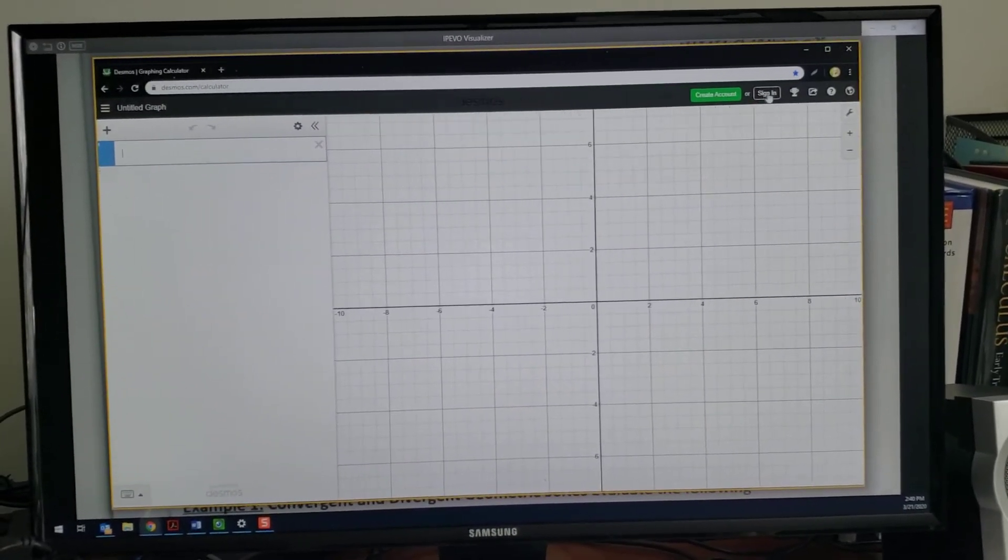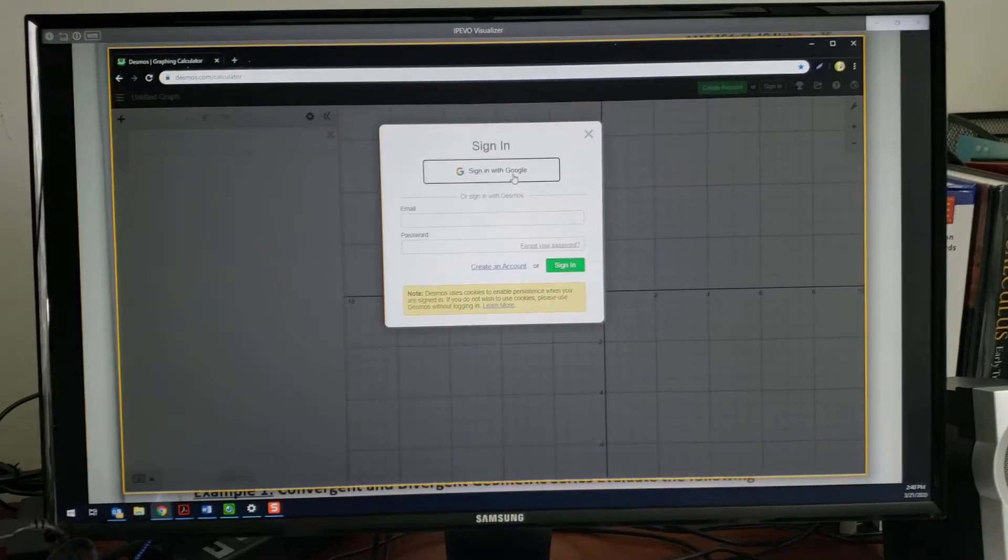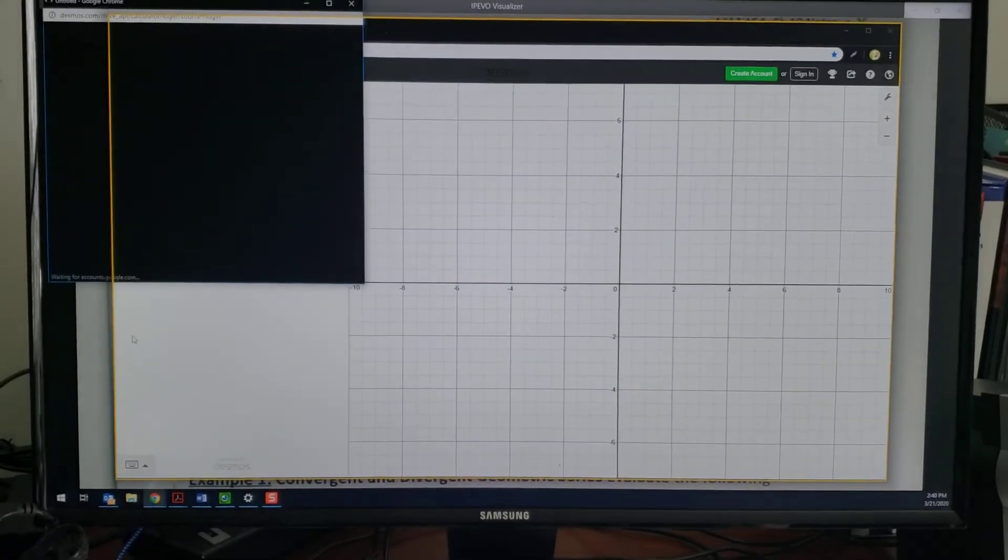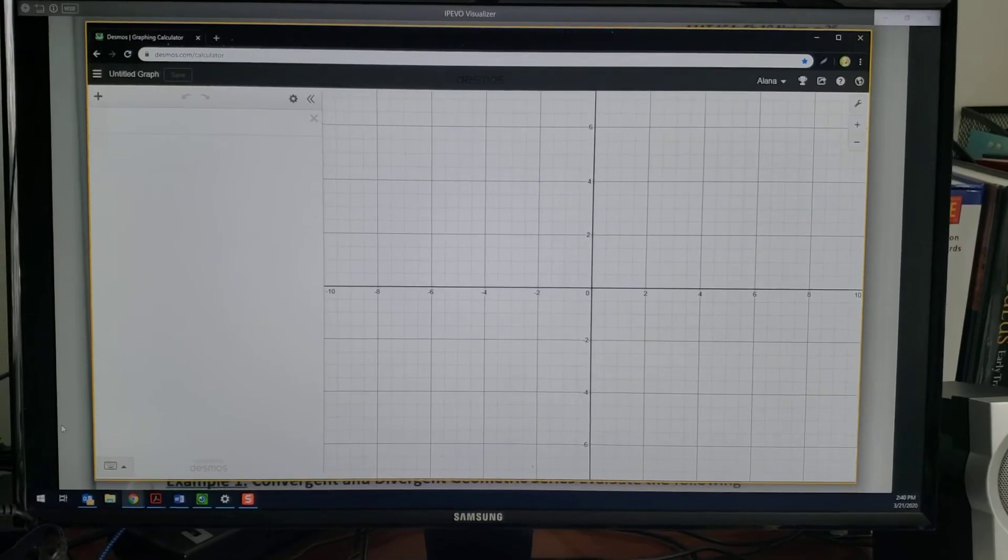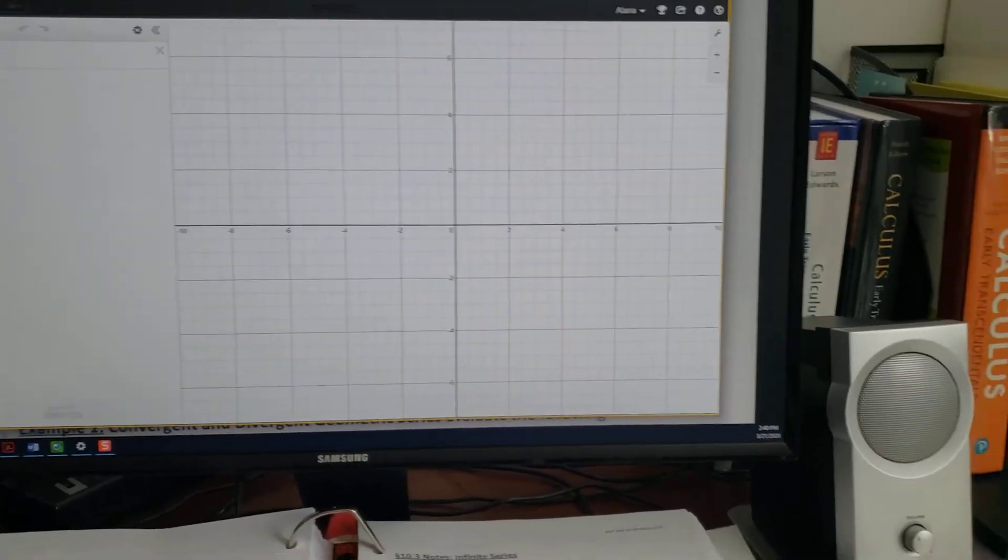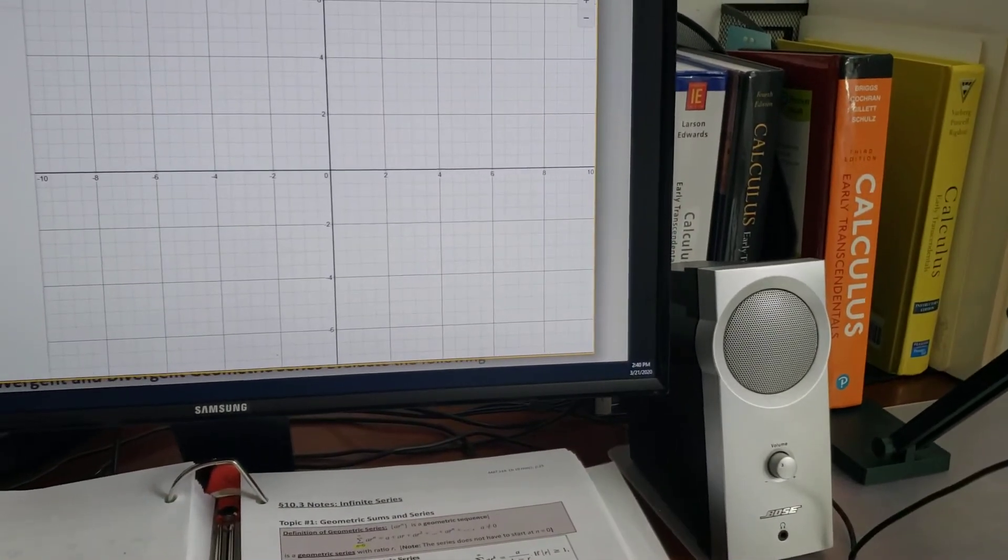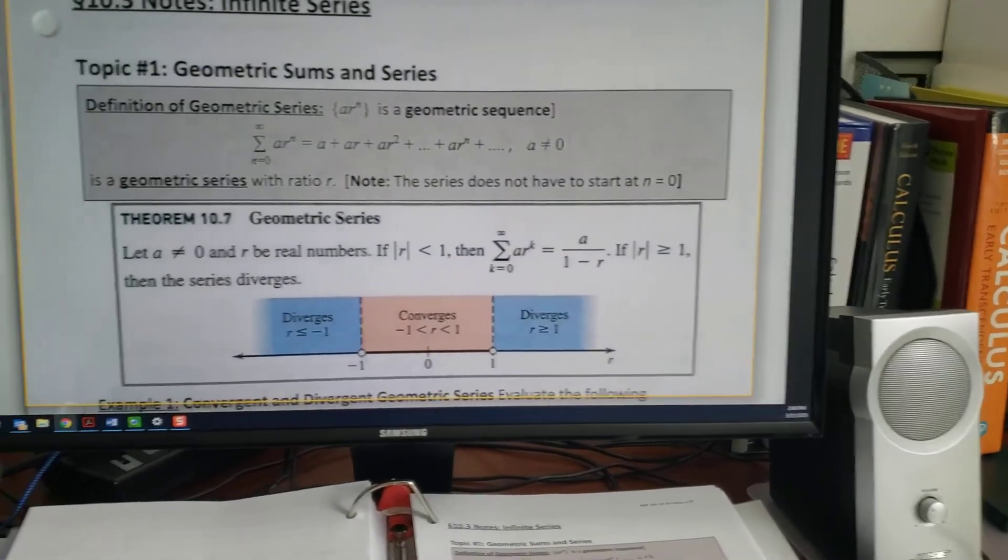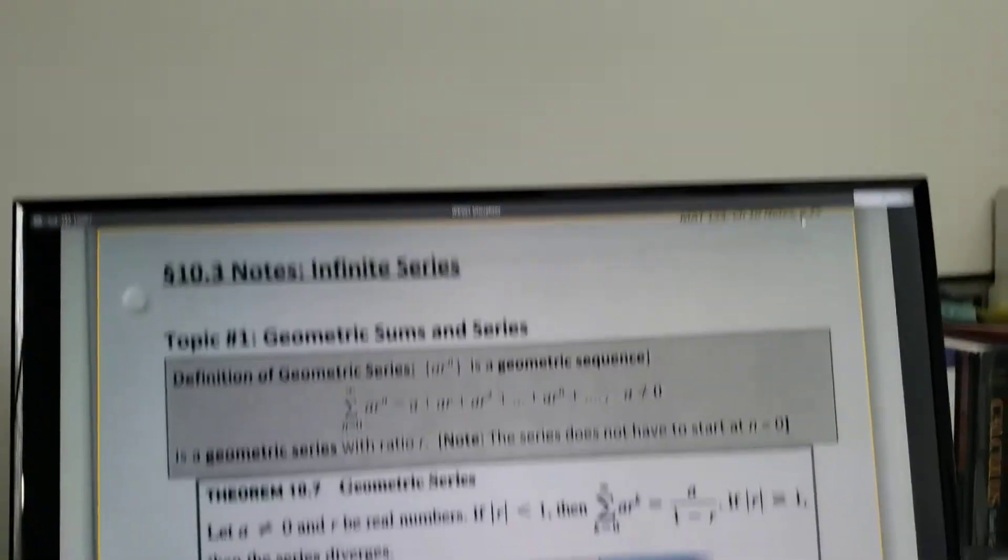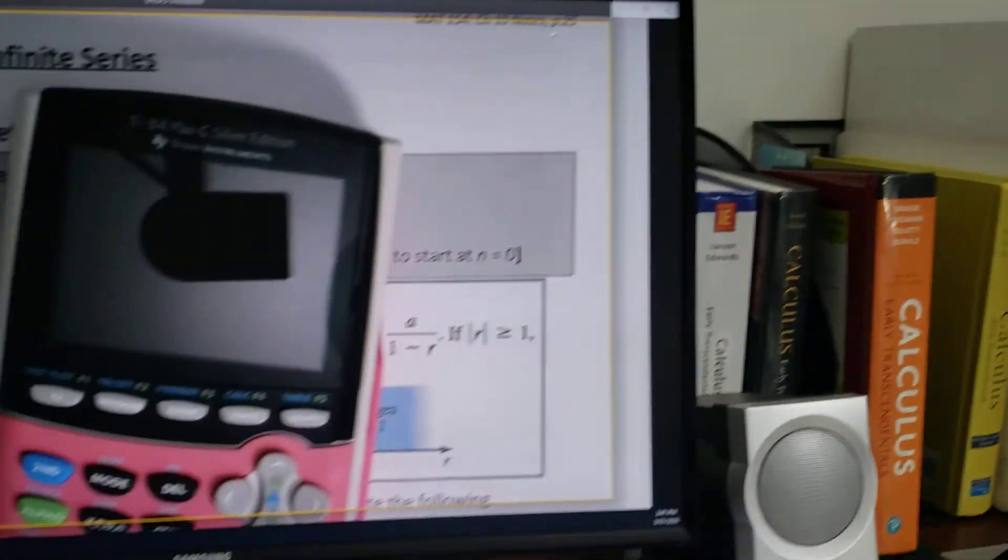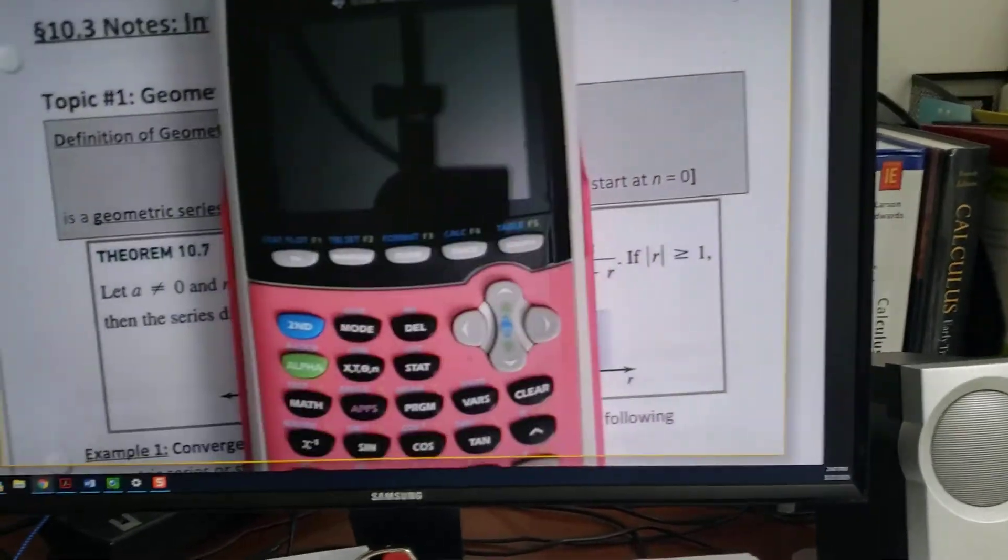And you can of course show them Desmos, you can show them Maple, you can show them TI Smart View if you own TI Smart View and so on. Of course if you want to show on your calculator you could, hypothetically speaking, show them a calculator on your Desmos, or excuse me, on your IPVO screen. So if you have a calculator, which I have, you could just put the calculator up on the screen and show them there.